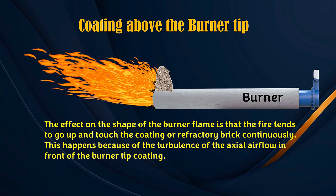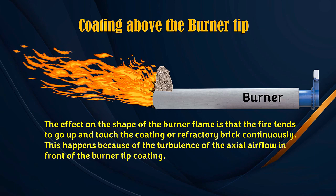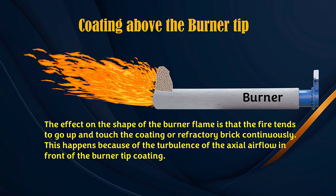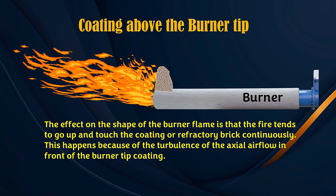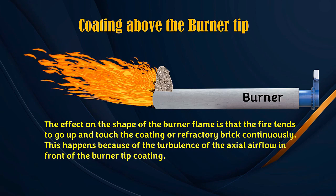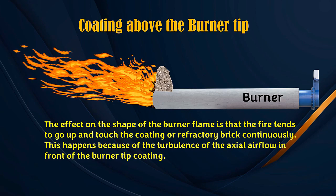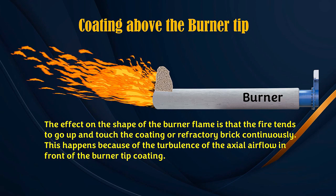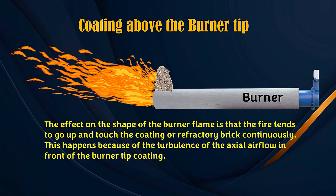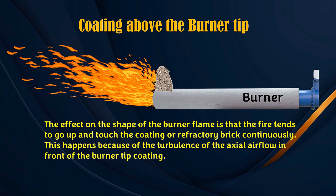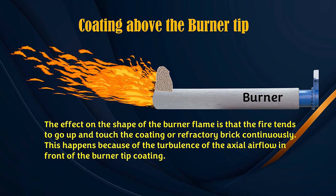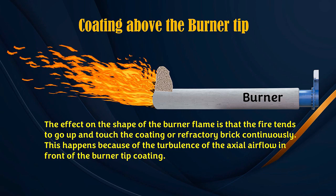The effect on the shape of the burner flame is that the fire tends to go up and touch the coating or refractory brick continuously. This happens because of the turbulence of the axial airflow in front of the burner tip coating. If this lasts longer or more than 24 hours, it can damage the coating in the kiln which is exposed to direct fire. This can be seen through changes in kiln shell temperature via the kiln shell scanner.